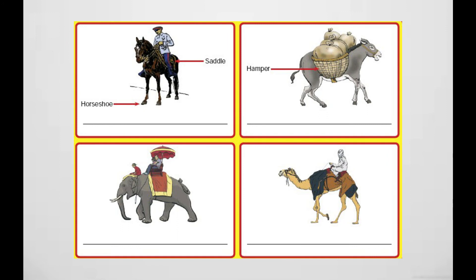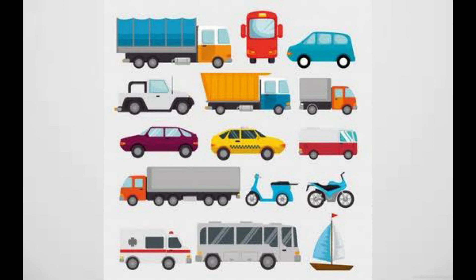A postal van carries letters and parcels from the post office to different places in the country. A fire engine carries special equipment and firefighters to put out fires. An ambulance carries sick or injured people to